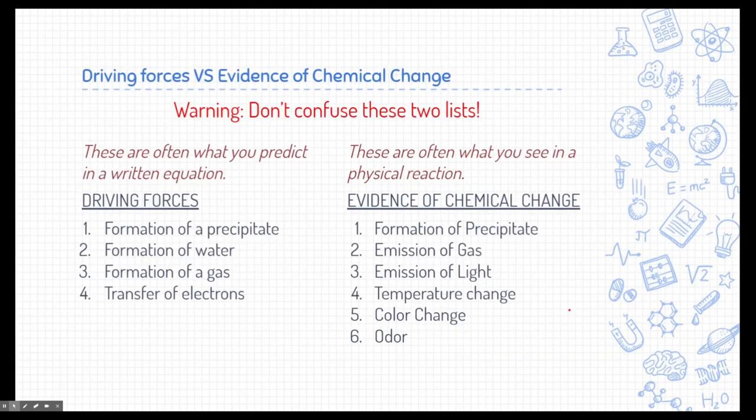Now, one thing to watch out for, we've learned in Chemistry 1 about evidences of chemical change. Don't confuse this list with a driving forces list, even though some of the things are the same. For driving forces, these are often the things that we predict in a written equation. Often, it's good to write down an equation for a reaction and look for driving forces. If we don't see any driving forces, then we know that we probably don't even need to do the reaction because nothing's going to happen. Now, evidences of chemical change are typically things that you see after a reaction is happening. You're mixing things, and you want to know if chemical change is taking place. These are the things that you see in a physical reaction.